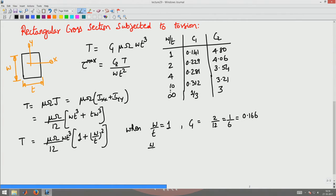If w by t is 2, C1 would be 5 by 12 which is 0.416. Basically for 2 it reduces still more drastically.